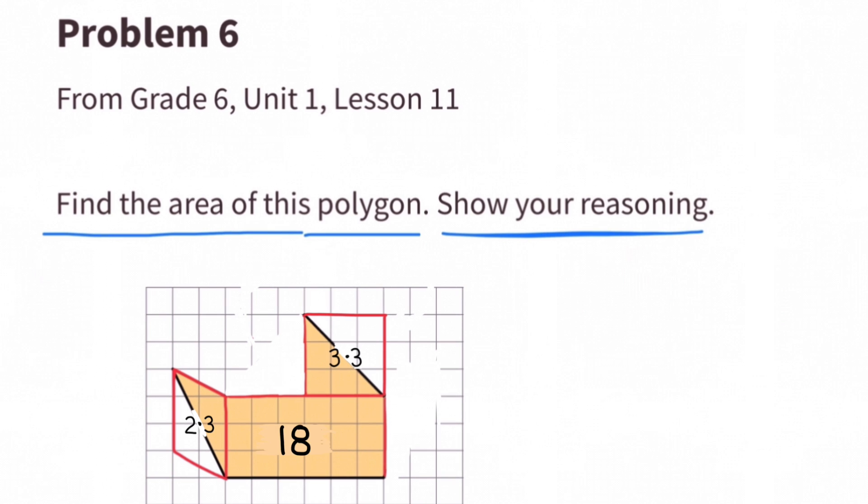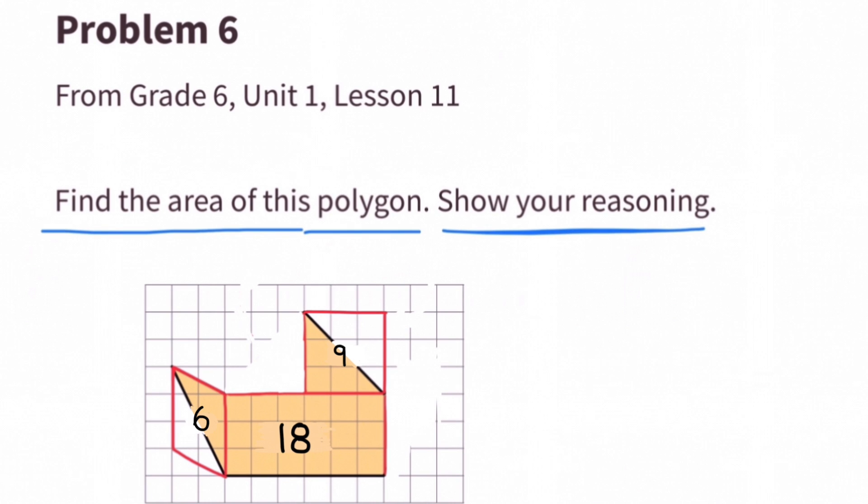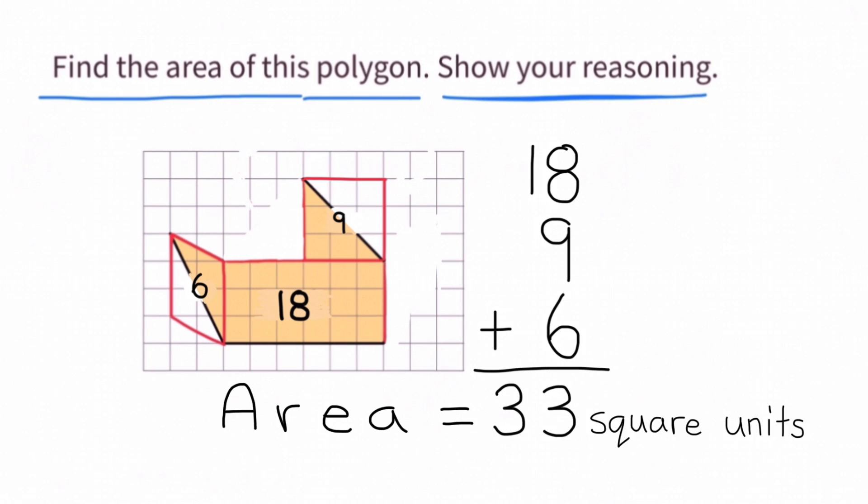Now we can find their area by multiplying the base times the height. 6 times 3 is 18, 3 times 3 is 9, and 2 times 3 is 6. The area of each of these shapes can be added together to find the total area of the original polygon. The area is 33 square units.